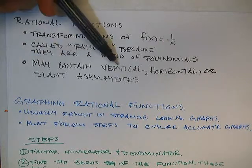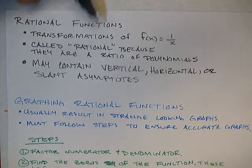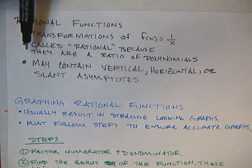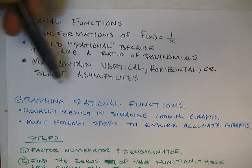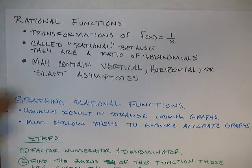Things you should understand about rational functions is they're made from transformations of 1 over x, the reciprocal function. And they're called rational because they're a ratio of polynomials, one polynomial on top of another one. These are going to contain vertical, horizontal, or what are called slant asymptotes. Today all we're going to deal with are vertical and horizontal. We're not going to monkey around with the slant asymptotes at all.